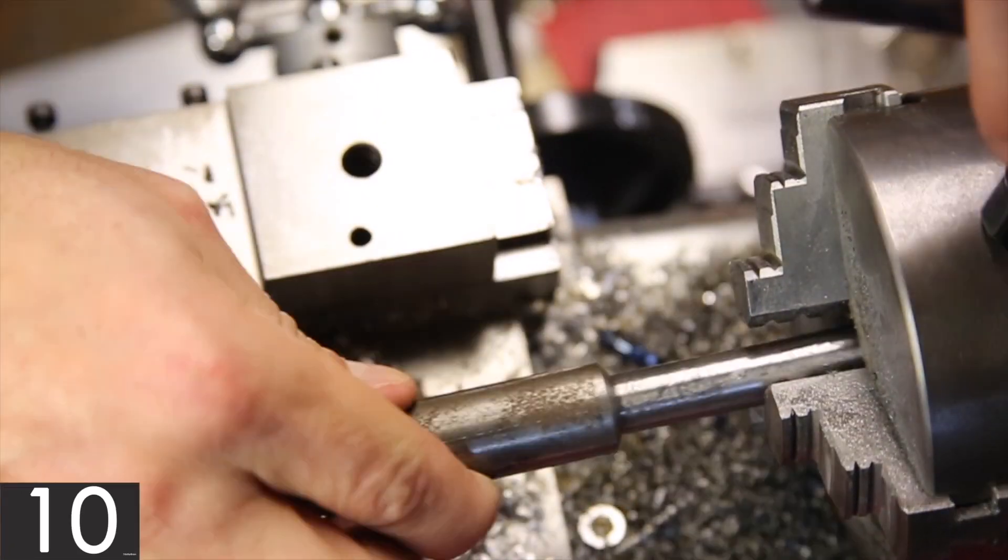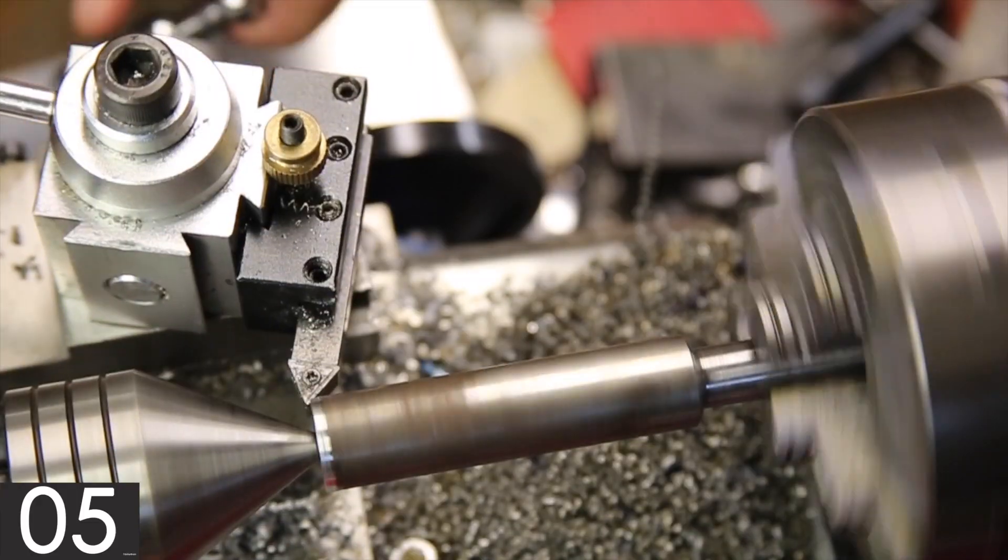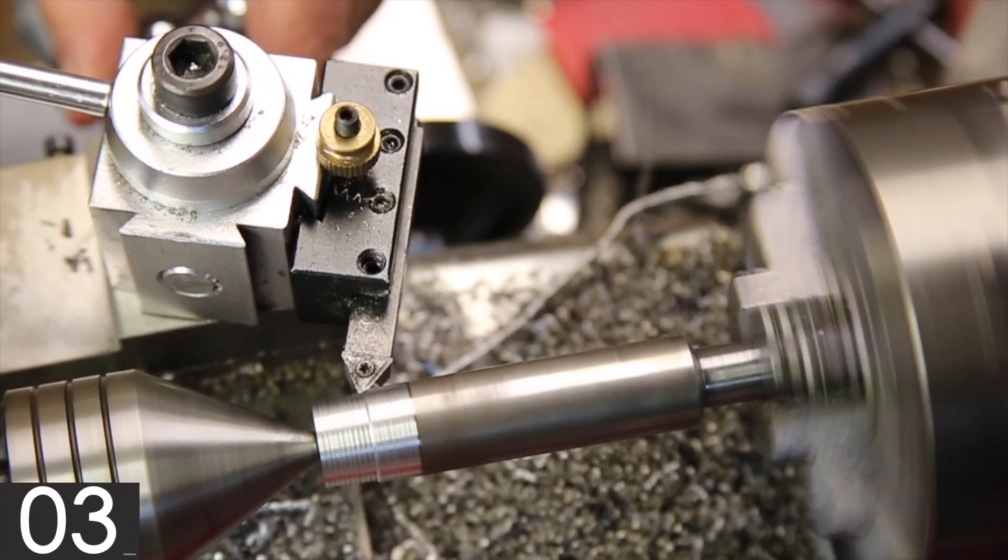Once you're happy, put your part back in the lathe, support it with the live center and the tailstock, put the tool post back together, and proceed to turn the taper using the compound slide.